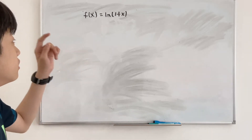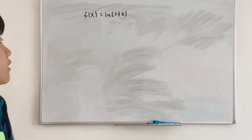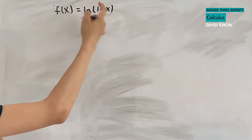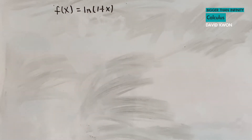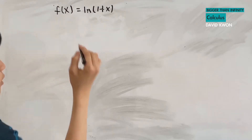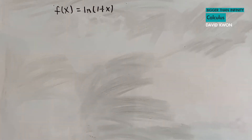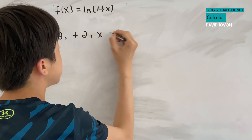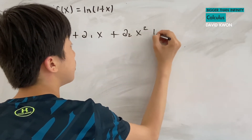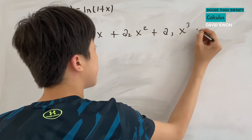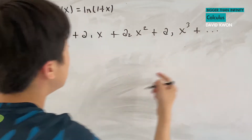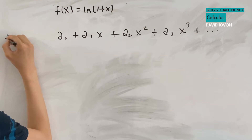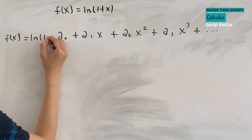Hello everyone, and today we will be doing the Maclaurin series for this function. To do this, we want to change this into a polynomial function. The general polynomial form of any function would usually be a₀ plus a₁ times x plus a₂ times x squared plus a₃ times x cubed, and so on with infinitely many terms. This is equal to f(x), which is also equal to ln(1+x).